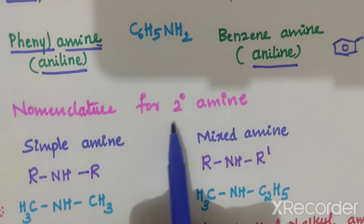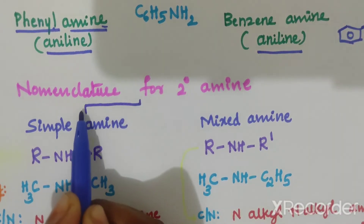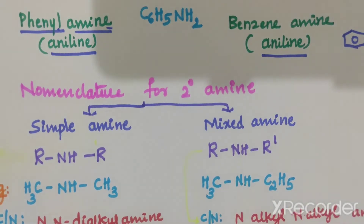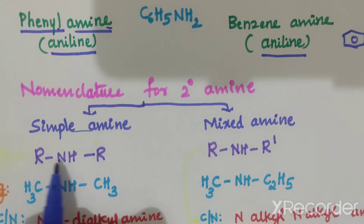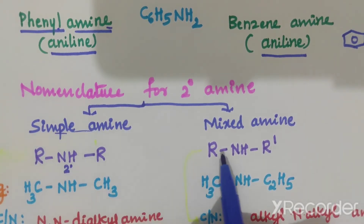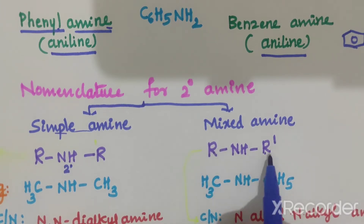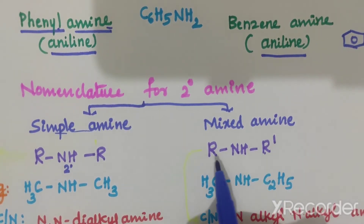If you consider second degree amines, there are two types: one is simple amine and another one is mixed amine. In a simple amine, the two R groups (alkyl groups) are similar — NH is second degree and these two R's are similar. In a mixed amine, the two R groups are different — this is R and this is R dash.